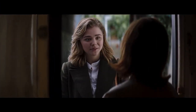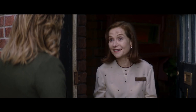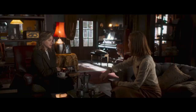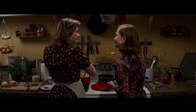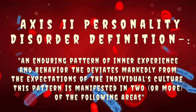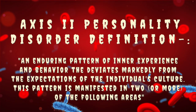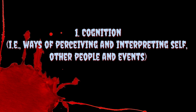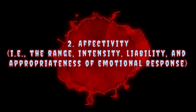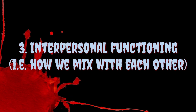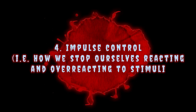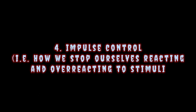Basically, a personality disorder is a learned and maladaptive response proportionate to previous experience, and if your personality disorder is severe, your mental immune system is low. An Axis 2 personality disorder is classified as an enduring pattern of inner experience and behaviour that deviates markedly from the expectations of the individual's culture. The pattern is manifested in two or more of the following areas: number one, cognition — ways of perceiving and interpreting self, other people and events; number two, affectivity — the range, intensity, liability and appropriateness of emotional response; number three, interpersonal functioning — how we mix with each other; and number four, impulse control — how we stop ourselves from reacting and overreacting to stimuli.